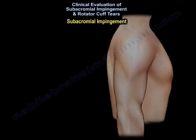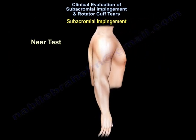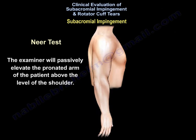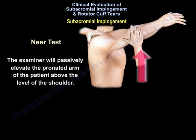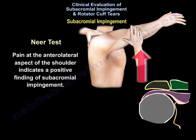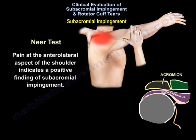We start with the Neer test for subacromial impingement. The patient is standing or sitting upright. The examiner will passively elevate the pronated arm of the patient above the level of the shoulder. Pain at the anterolateral aspect of the shoulder indicates a positive finding of subacromial impingement.